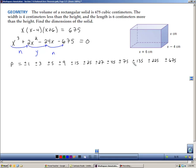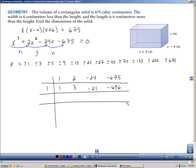I'm going to set up my synthetic substitution by using the coefficients there of 1, 2, negative 24, and negative 675. I'm going to make a table. So I'm going to try the number 1. And remember you add, so 1 plus nothing is 1, and then you multiply 1 times 1 and add it to the 2. Then you multiply 1 times 3 and add it to the negative 24, and then 1 times negative 21, and add that to negative 675. So this table represents my synthetic substitution.